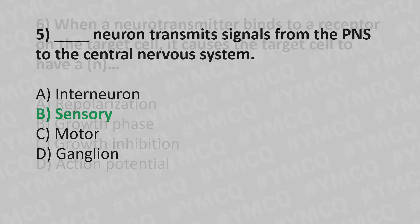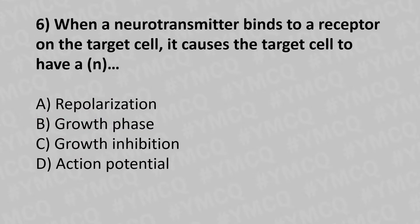Moving to our sixth question. When a neurotransmitter binds to the receptor on the target cell, it causes the target cell to have an: Option A: repolarization. Option B: growth phase. Option C: growth inhibition. Option D: action potential. And the answer is option D: action potential.